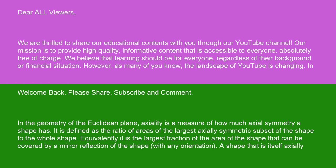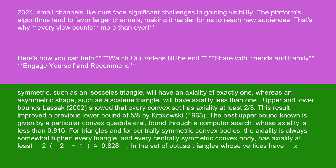A shape that is itself axially symmetric, such as an isosceles triangle, will have an axiality of exactly one, whereas an asymmetric shape, such as a scalene triangle, will have axiality less than one.